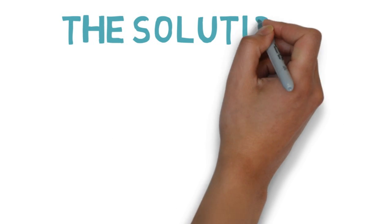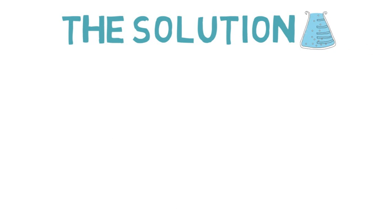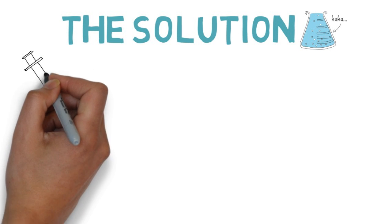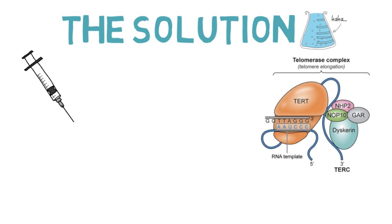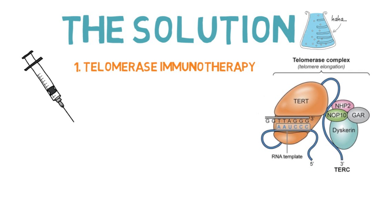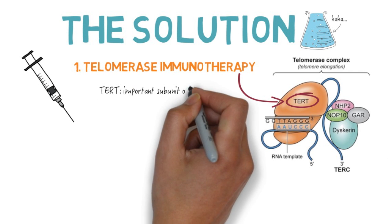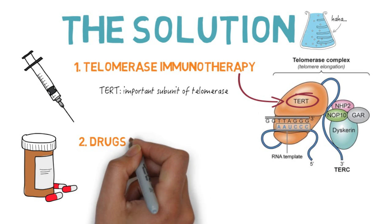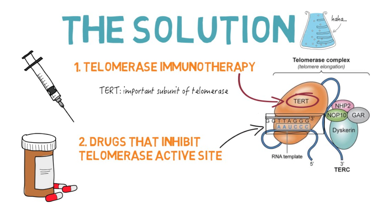Is there a solution? Many researchers have analyzed ways to stop telomerase activity in cancer cells. The first is telomerase immunotherapy, where immune cells are programmed to destroy cancer cells marked with TERT, a subunit in telomerase. There are also drugs that block the active site, which is where telomerase attaches to DNA.